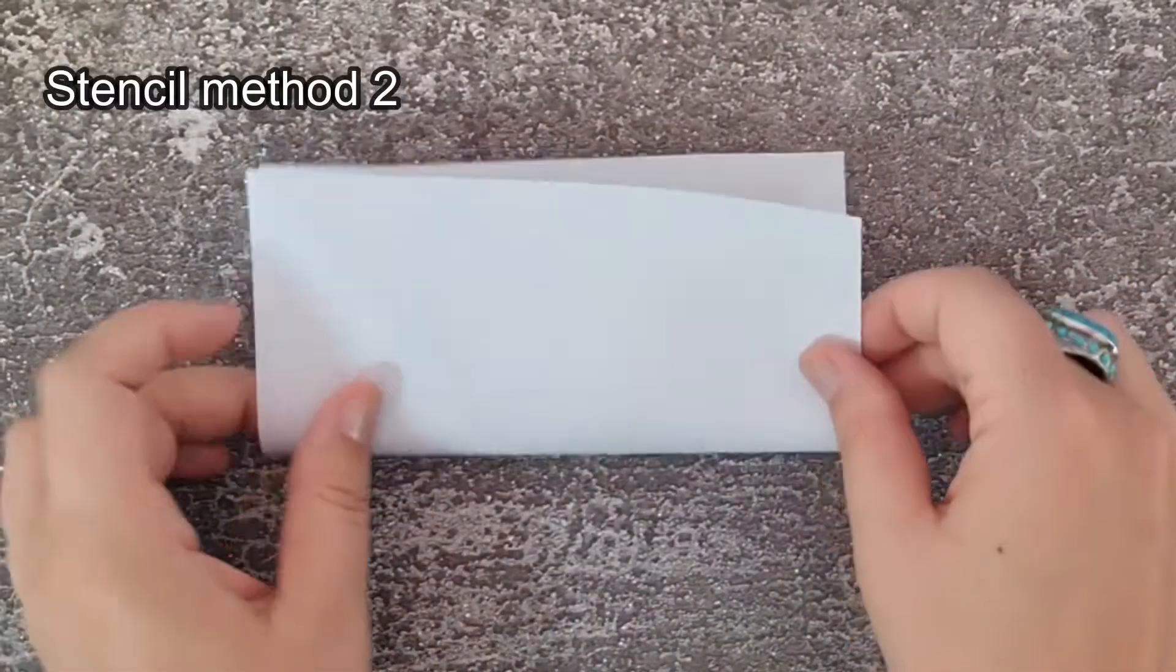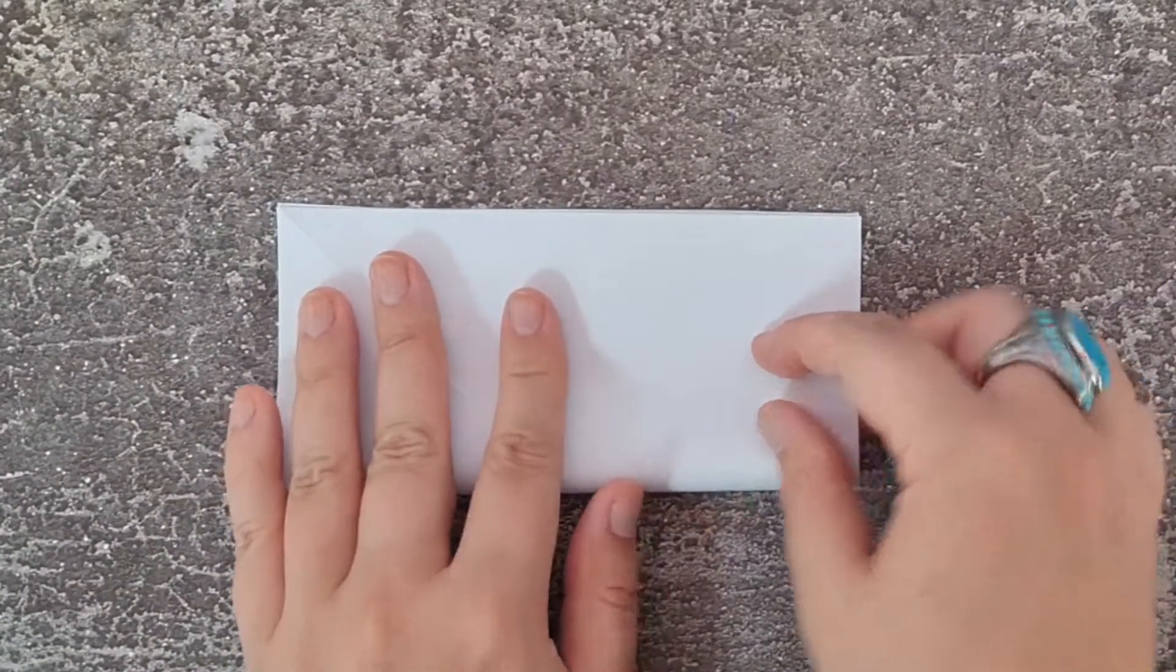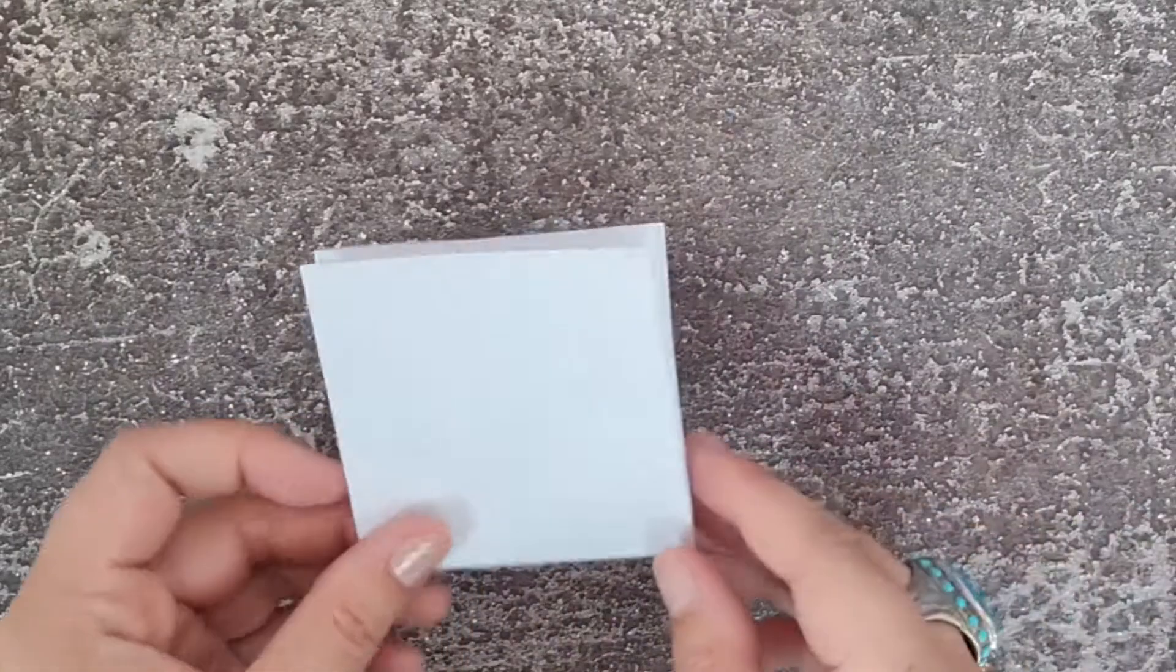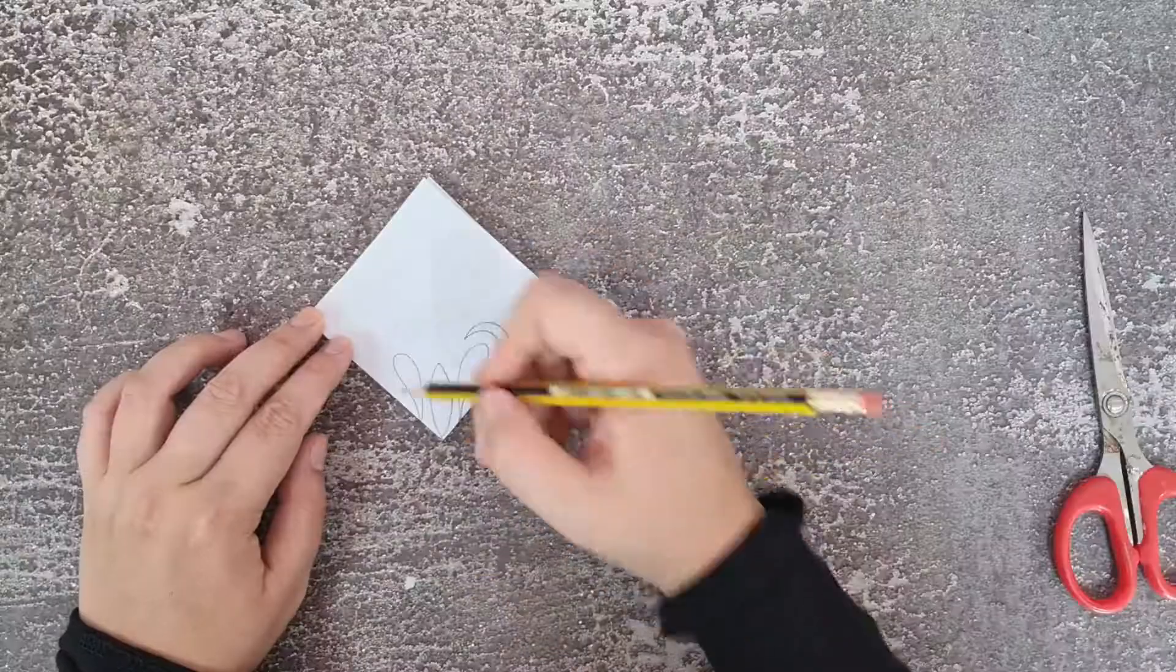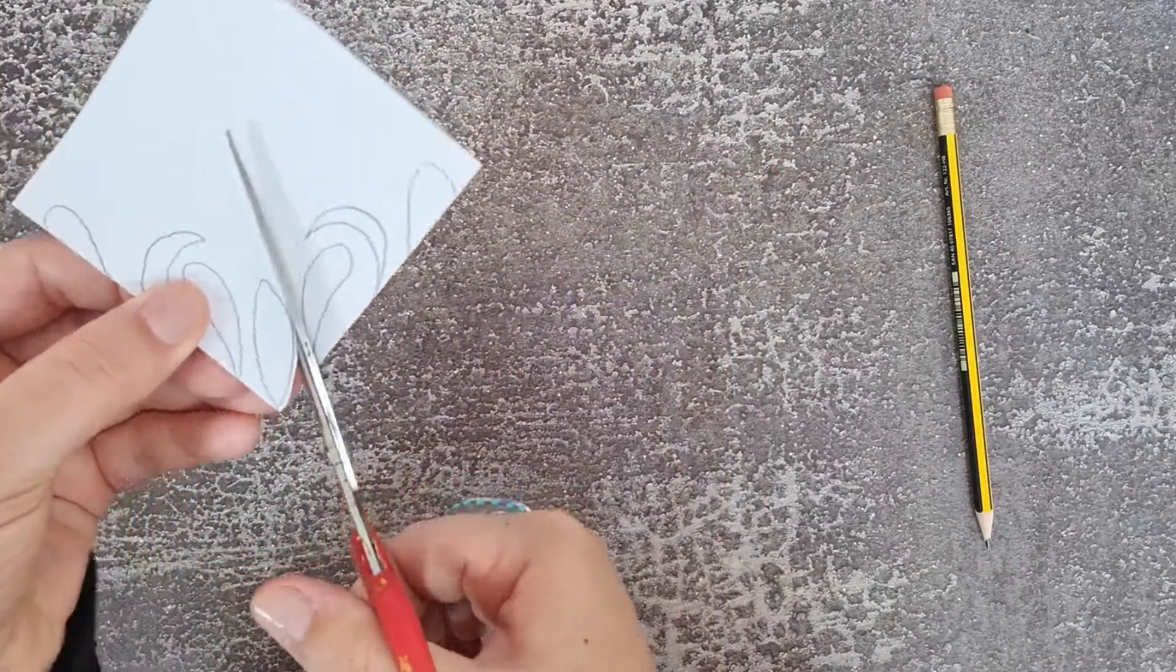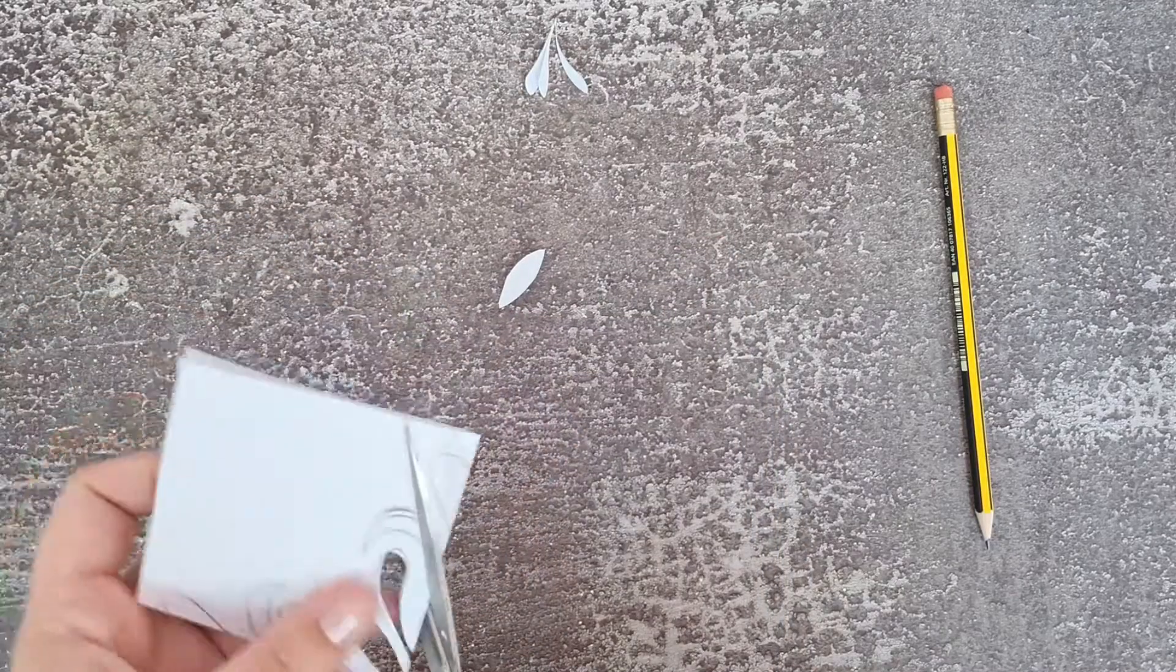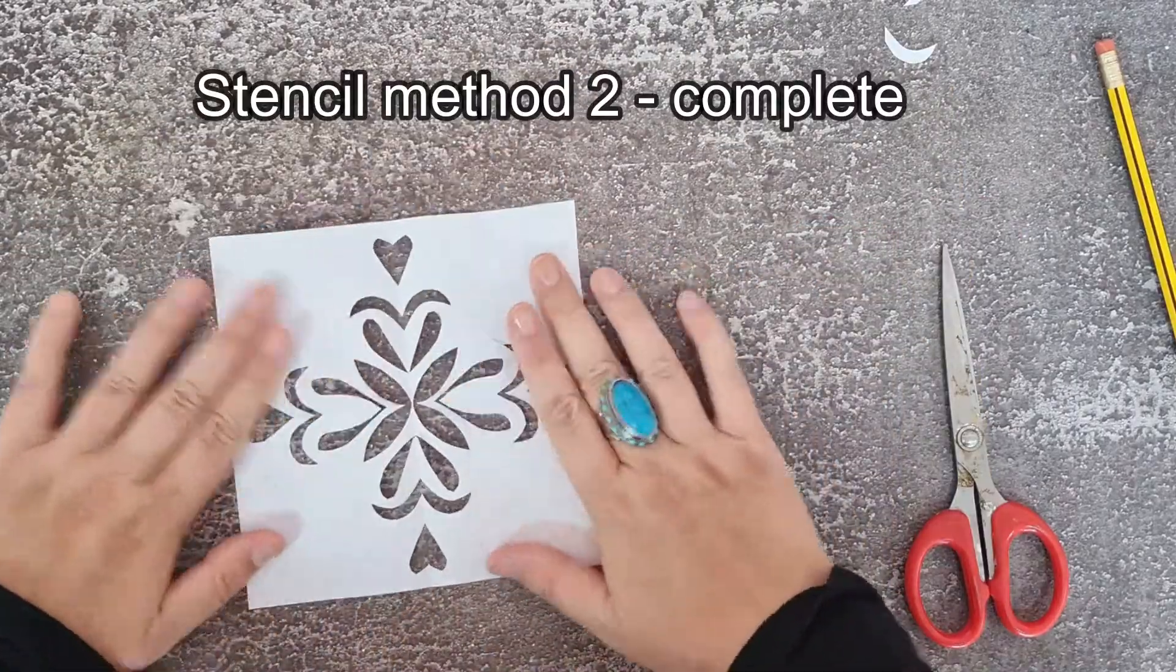In stencil method two, we start with a square as we did before, but this time we fold it in half to make a rectangle and then in half again to make a small folded square. Now take some scissors and cut along the two folded edges some simple shapes and open to reveal the stencil.